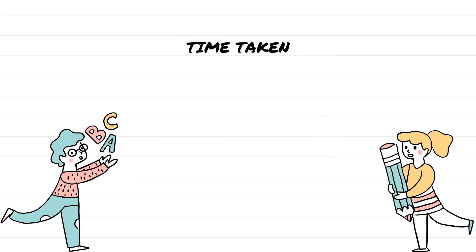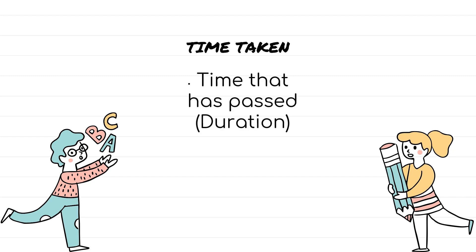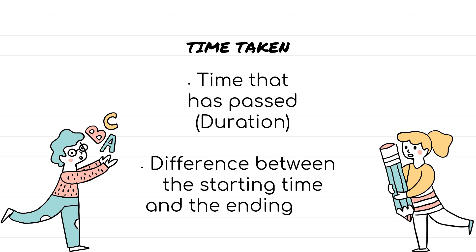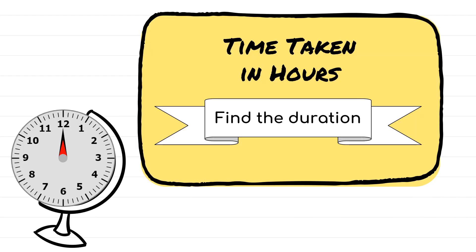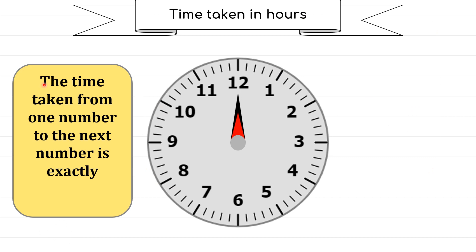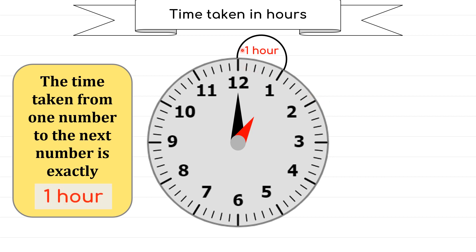Time taken is the time that has passed or that has gone by — it is called duration. It is also the difference between the starting time and the ending time. When talking about hours, only the hour hand will move. The time taken from one number to the next is exactly 60 minutes, so 60 minutes means one hour. We can draw one hop from one hour to the next, and that hop will represent one hour.